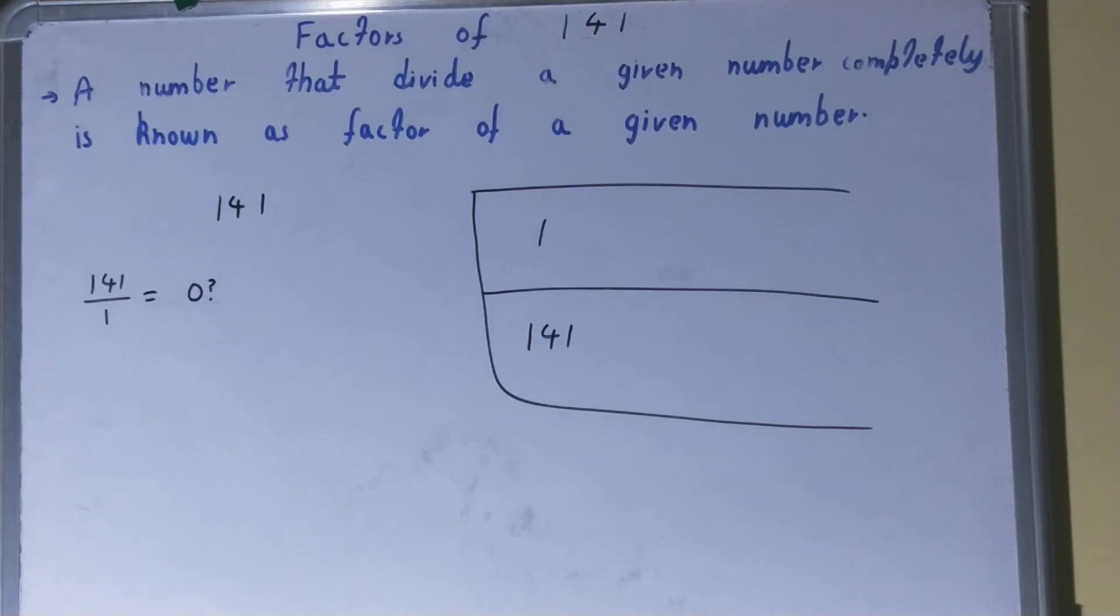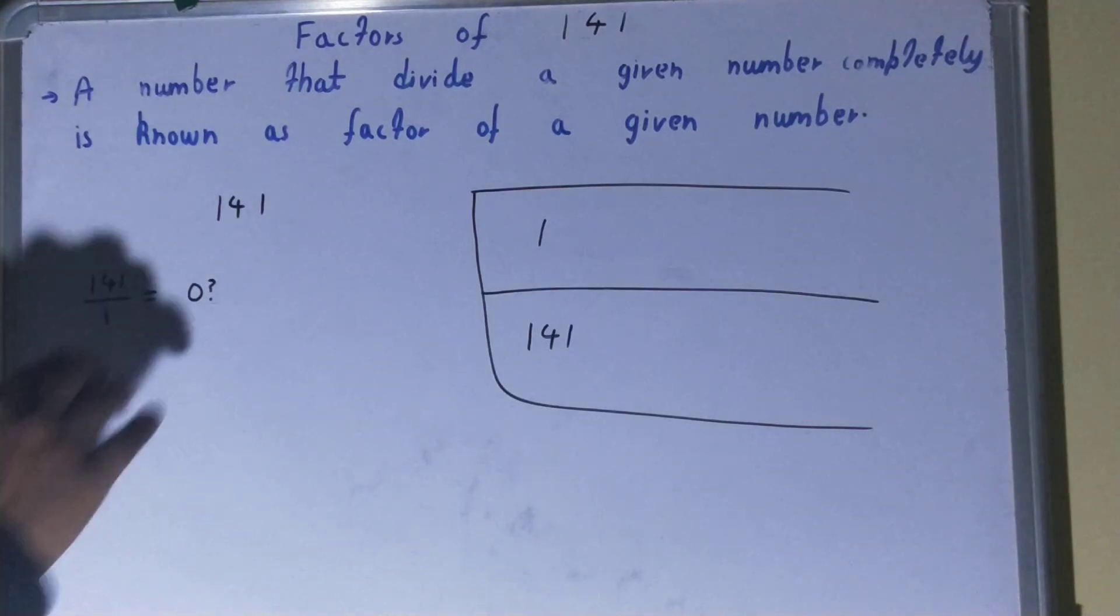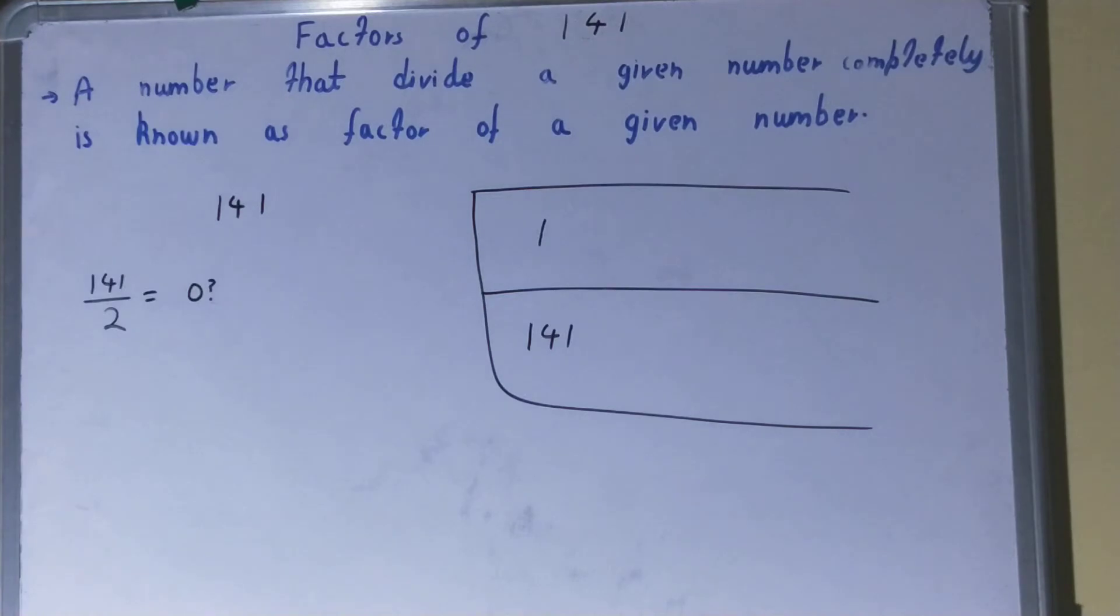After 1 comes is your 2. If we divide 141 by 2, will you get the remainder as 0? The answer is no because it is an odd number. So 2 is not a factor.